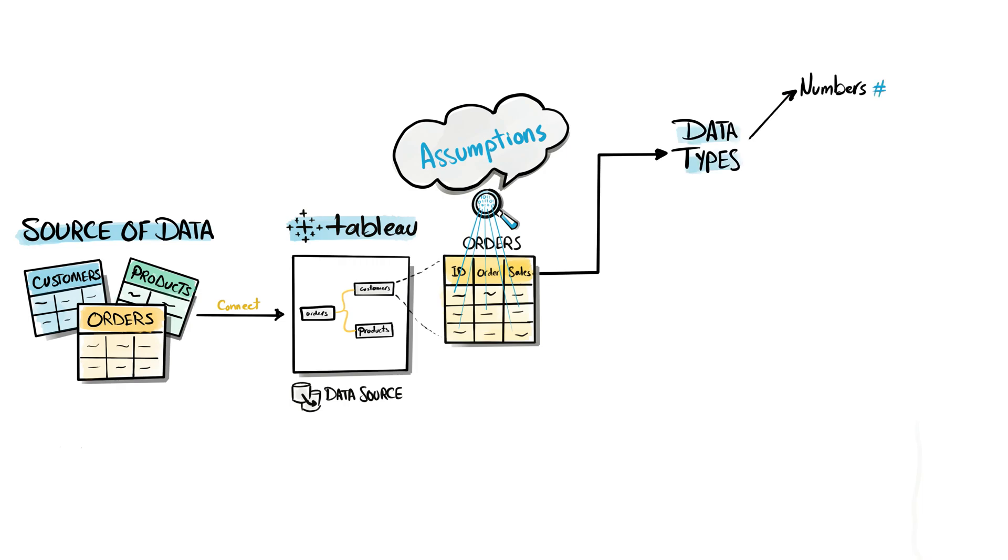So Tableau can assign each field to data types like integer, string, date, and so on. Data types give us information about the kind of data stored inside our datasets. This piece of information is very helpful for Tableau in order to understand how to deal with your data, which rules, operations, and calculations can be performed.